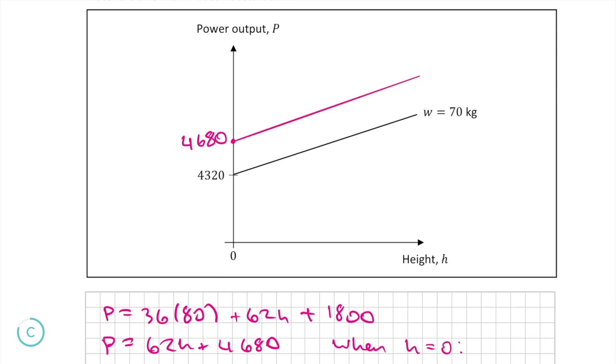Since this function has the same slope as the first one, it's going to be parallel to the line already drawn on the graph, so it should look something like this. Part c is worth another 5 marks.